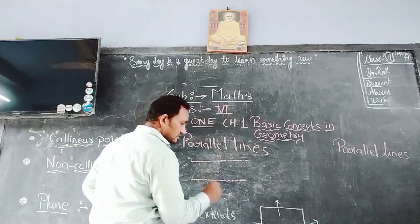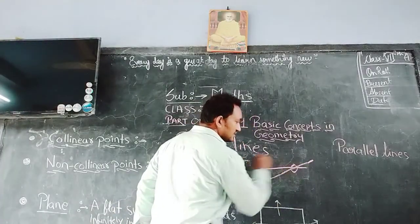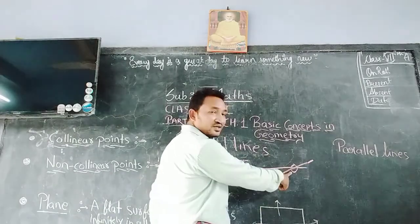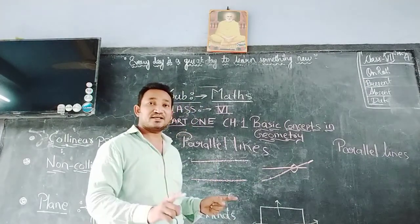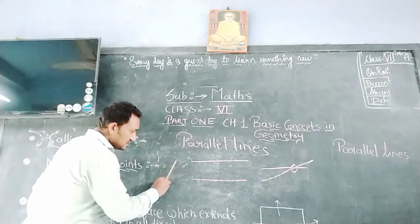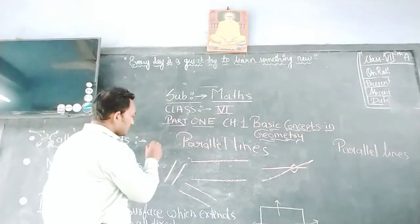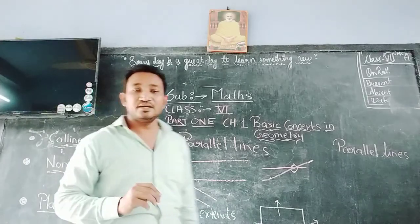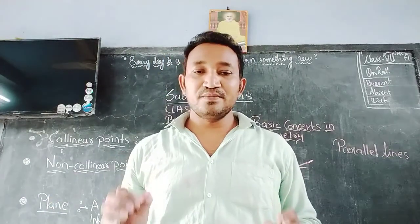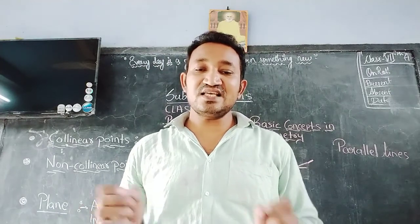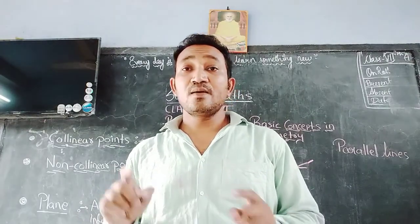इस तरह से — if lines intersect each other like this, then this is not a parallel line. The lines जो intersect नहीं करती हैं, उन्हें parallel lines कहते हैं. They can be in different orientations. इन सभी lines को हम parallel lines कहते हैं. Means, lines which lie in the same plane but do not intersect each other are said to be parallel lines.